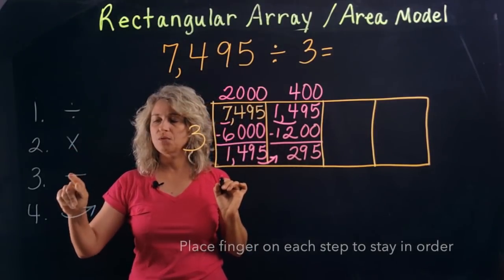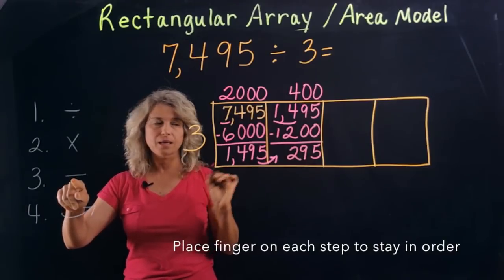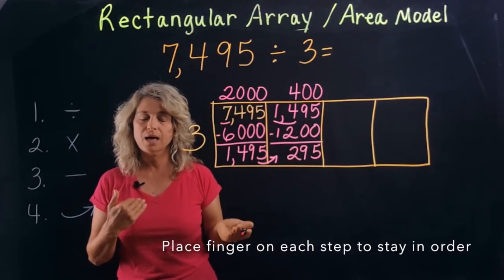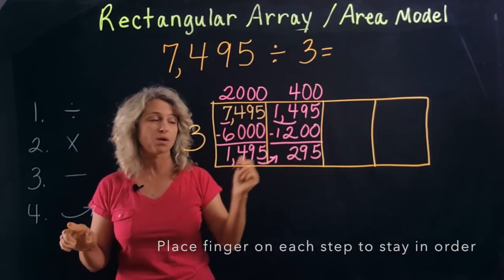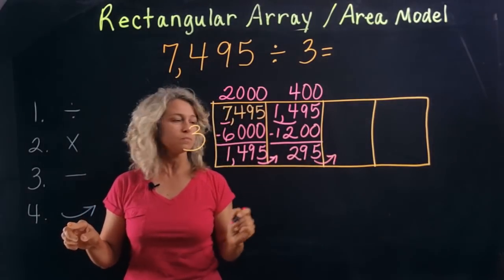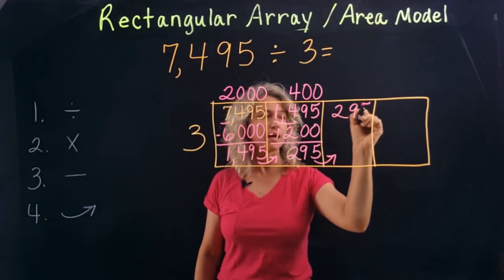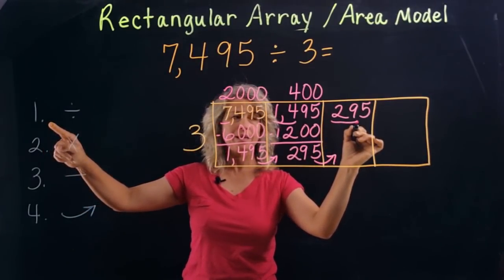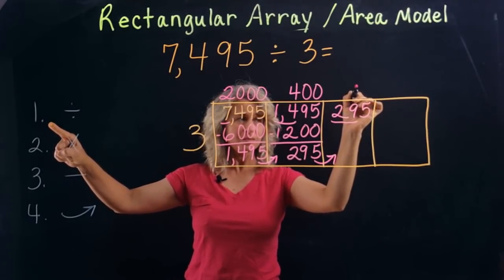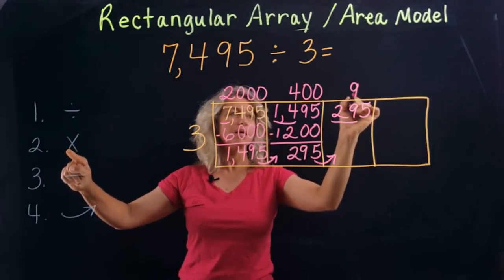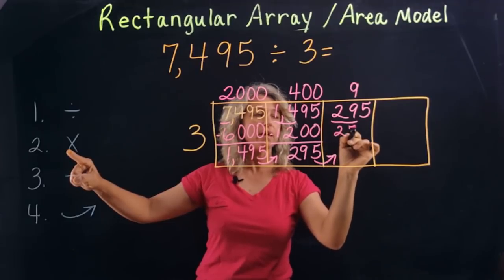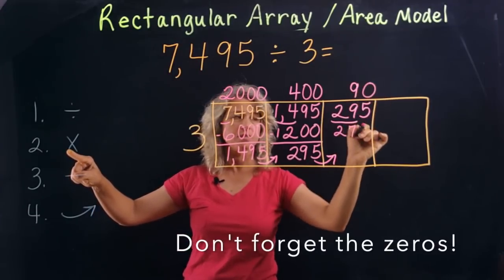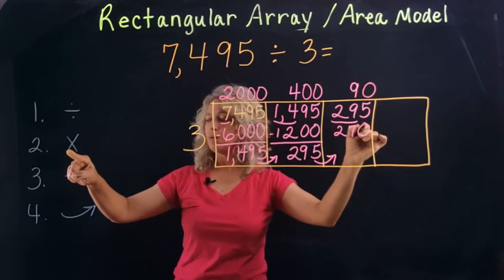I'm putting my finger on the steps as we go through so I can keep my spot — that's a good habit when you begin this process so you know where you are. Carry this over: 295, and we're ready to go back to the beginning. Will 3 go into 2? No. But will it go into 29? Absolutely — 9 times, because 9 times 3 is 27. Don't forget to add the zero here as well. Subtract.